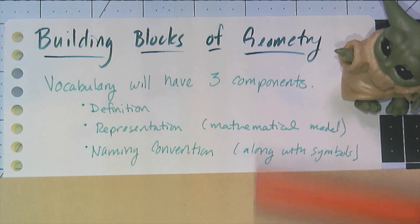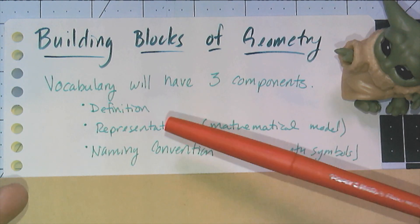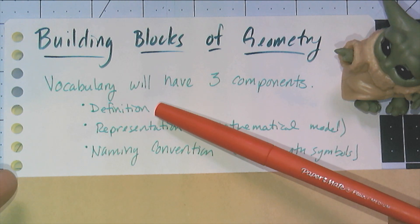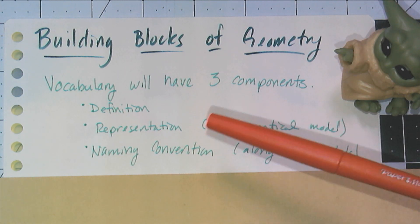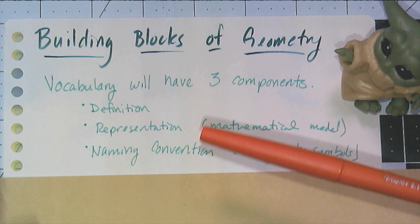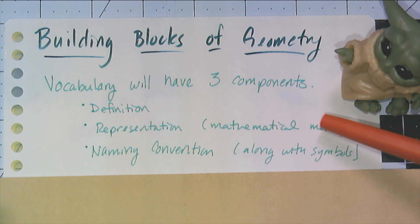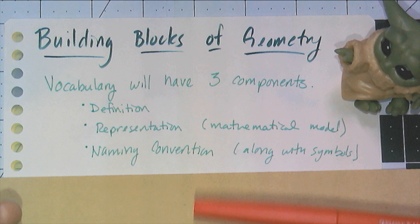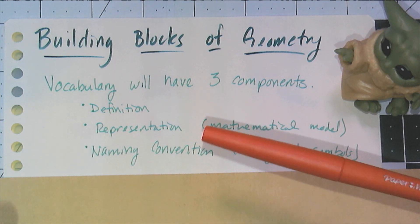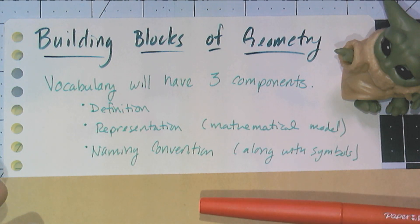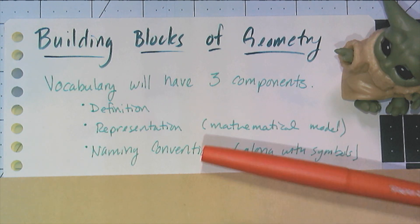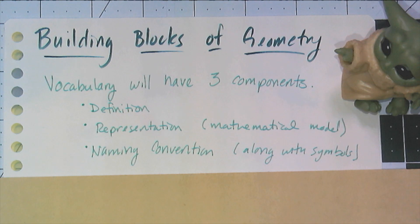It'll start with the word, then a definition, then there'll be a representation which is how we draw the object, called a mathematical model, and then we'll go over any naming conventions. That's the type of letter you use, the symbols that are used to shorthand describe the object or the thing we are defining.